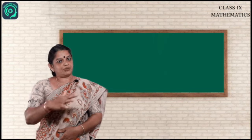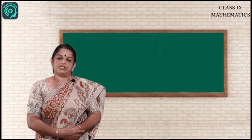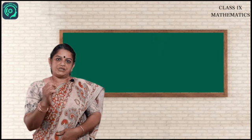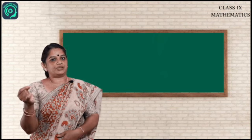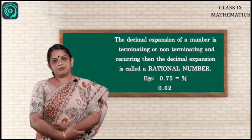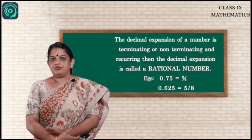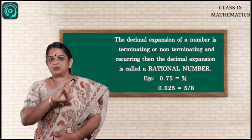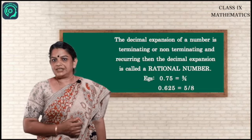So rational numbers can be defined in two ways. First, a number expressed as p/q where p and q are integers and q ≠ 0. Alternatively, if the decimal expansion of a number is terminating or non-terminating recurring, then it is a rational number. For example, 0.75 can be expressed as 75/100, that is 3/4, which is a rational number.